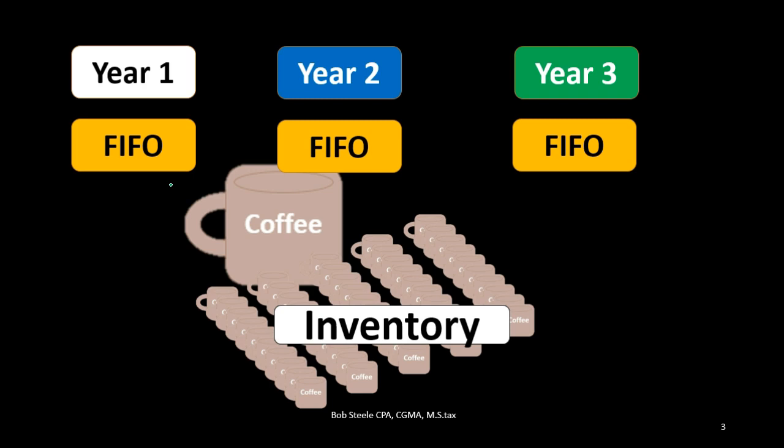What we don't want to see is cost flow assumptions changing consistently over time in order to change the effect on financial statements — particularly the timing of net income on the income statement due to the effect in cost of goods sold. Therefore, once we have a cost flow assumption, we expect to and want to stay with it so that we have the ability to compare year to year, month to month, time period to time period.